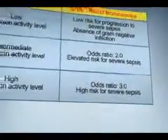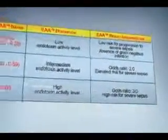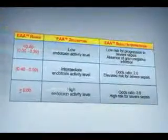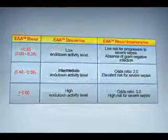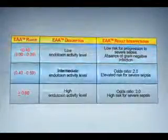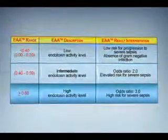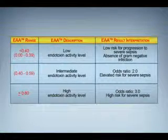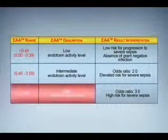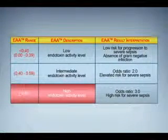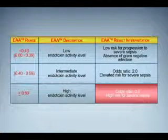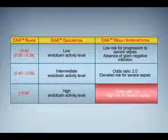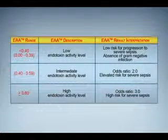The EAA is intended to help assess a patient's risk of severe sepsis during the first critical hours following admission to a critical care area. Test results are most useful when considered in the context of the patient's overall clinical condition. Patients with high endotoxin activity levels on the first day of admission to a critical care area are three times more likely to develop severe sepsis within the next 24 hours than subjects whose EAA values are low.